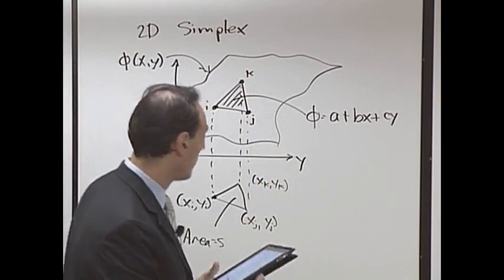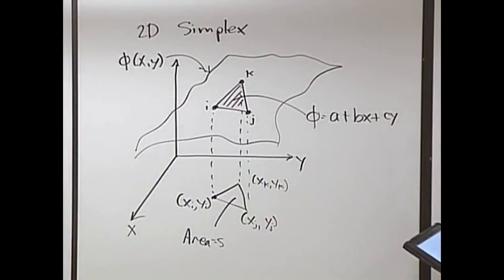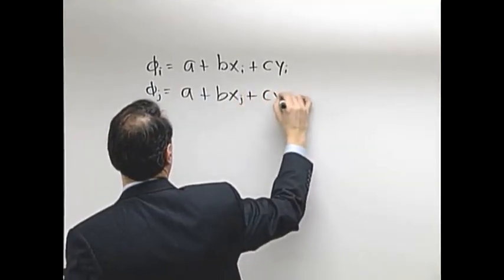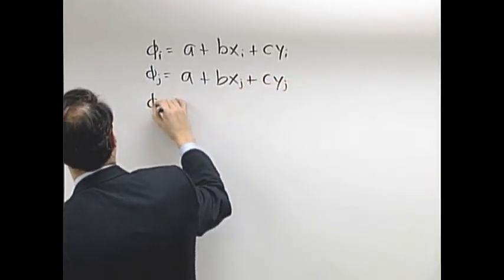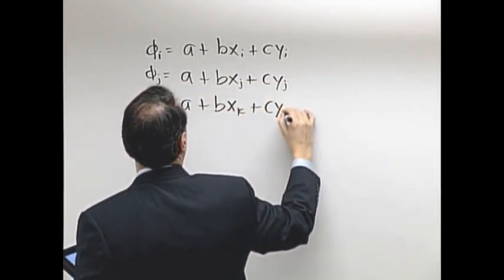So how do we do this? First of all, here are my constraints. It has to go through the i-th point. So I have a plus b xi plus c yi. That has to be satisfied. If I put myself at xi, yi, it has to go through ψi. Also has to go through ψj, a plus b xj plus c yj. And also has to go through k.